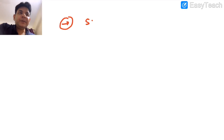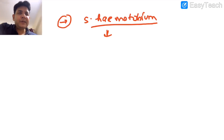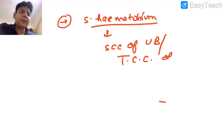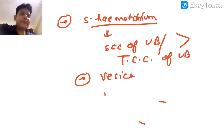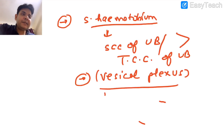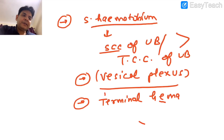Schistosoma haematobium has a terminal spine. It resides in the vesical plexus and leads to two types of carcinoma: squamous cell carcinoma of the urinary bladder or transitional cell carcinoma of the urinary bladder — squamous cell being more common than transitional cell.